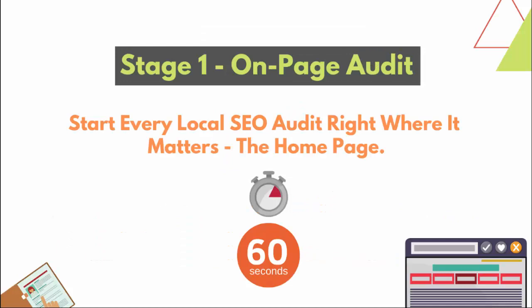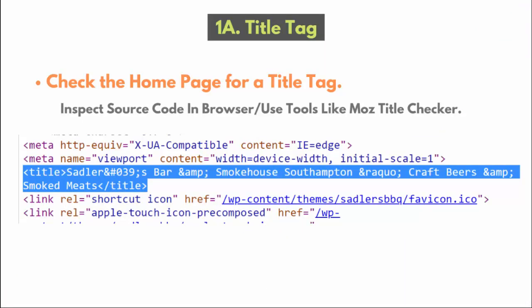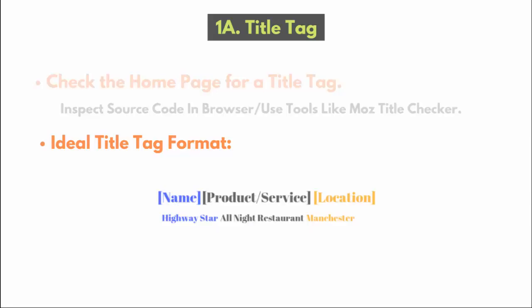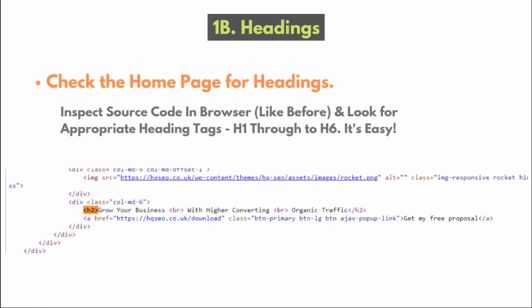Stage one — 60 seconds, on-page audit. Start every local SEO audit right where it matters: the home page. Check the title tags — do you have your primary keyword and your location in there? Name, product/service, location. For example: 'Highway Star All Night Restaurant Manchester.' Next, the H1 tag — is there only one H1 tag? If there is, great; if not, delete the rest. You want only one.